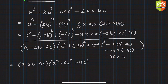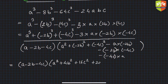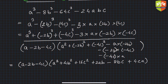Now for the cross terms: minus a times minus 2b gives plus 2ab. Then there are three minus signs, so it becomes minus 8bc. And minus 4c times a gives plus 4ca. So the final answer is a minus 2b minus 4c times a square plus 4b square plus 16c square plus 2ab minus 8bc plus 4ca. These are the two factors — factor one and factor two. You cannot reduce it further.